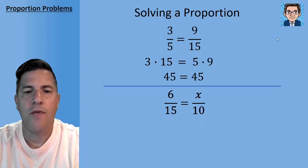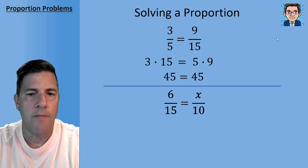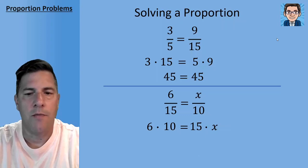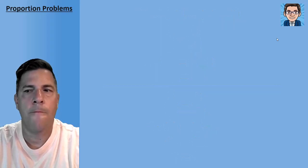So we can use that to solve for an unknown. So if we've got 6 over 15 equals x over 10, we can cross multiply the 6 times the 10 and the 15 times the x and set them equal to each other. So 60 is going to equal 15x. Divide both sides by 15 to solve for x and we get x equals 4.